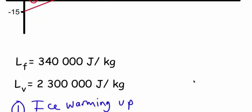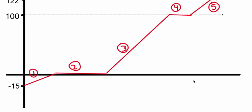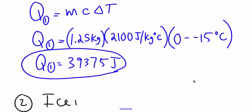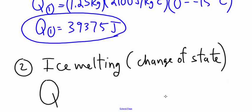Now if we go back up, that's where we're going to start the change of state. So this is where ice is melting. Anytime you have a change of state, we have to use the new equation.